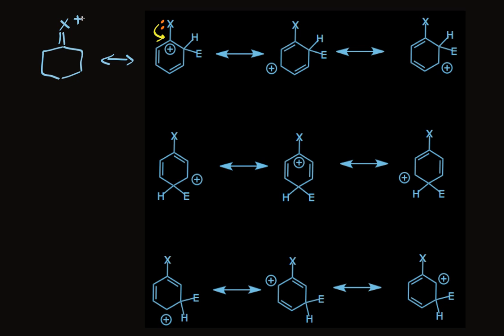This puts the positive charge on the halogen. Now you know resonance theory says the more resonance forms that are possible, the more stabilization results from resonance. We've got a fourth form, so it contributes more to the stability of this ortho substitution intermediate.